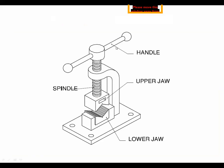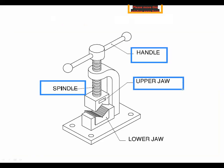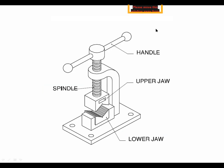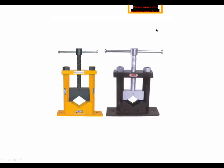See the different parts: handle, spindle, upper jaw, and lower jaw. The lower jaw is generally fixed and the upper jaw is movable. We can move it with the help of the handle by means of the spindle. These are the different parts of the pipe vise.